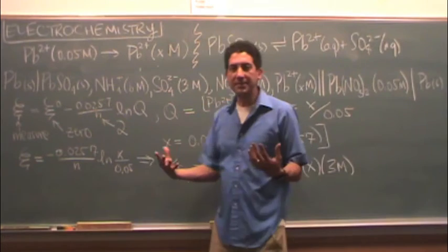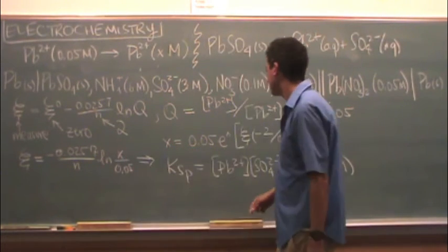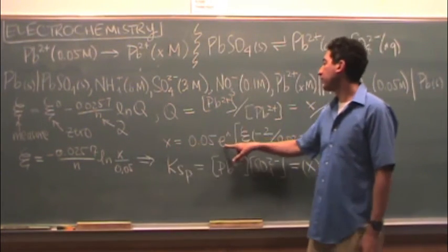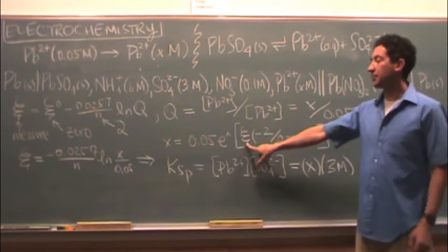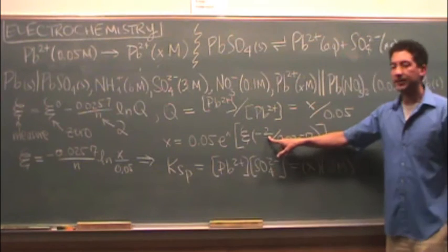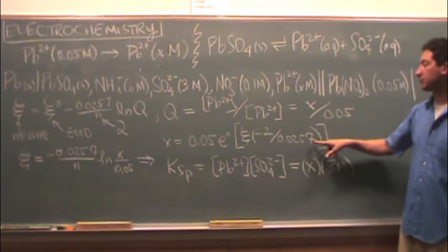If you're a little fuzzy on taking anti-logs, I solved X here. X is 0.05 times E raised to this whole quantity here: the measured value of the potential, minus 2, that's N, divided by 0.0257.